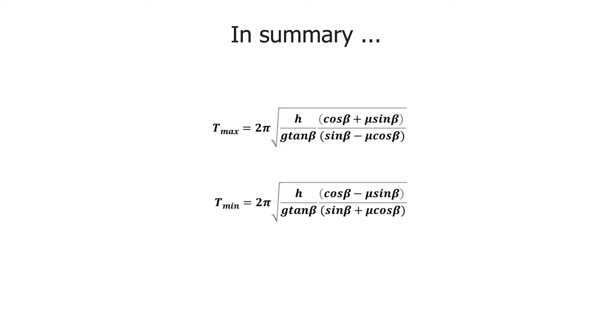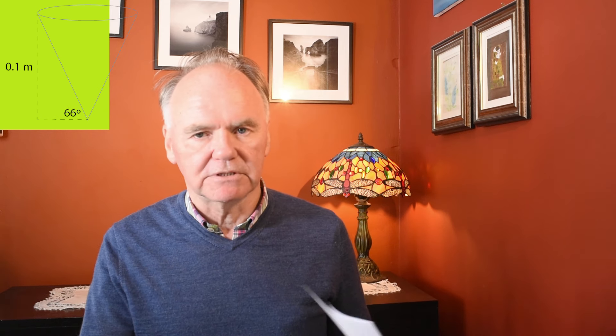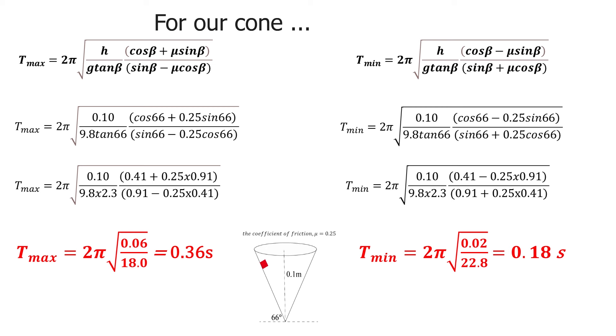You make sure that gives you a minimum and maximum time. Putting our values in — the height of the cone is 10 centimetres, the angle it makes with the horizontal is 66 degrees, and gravitational field strength is 9.8 metres per second per second — we get a minimum period of 0.18 seconds and a maximum period of 0.36 seconds. In other words, if the cone is rotating any quicker than five times a second the block will pop out, and if it's rotating any less than approximately three times a second the block will slide down. A good physics question covering resolution of forces, Newton's second law, choosing coordinate systems, and centripetal circular motion — all things you have to know very well if you want to take the subject further and do even more difficult questions.